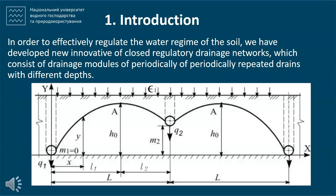Figure 1 presents the scheme for calculating groundwater levels between shallow and deep drains during infiltration feeding. The deep drain is located on the waterproof layer, while the shallow one is above the waterproof layer. Also shown is the apex of the water separation between shallow and deep drains.